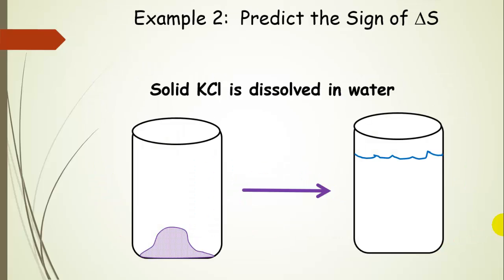Here's another example. Now we're going to take solid potassium chloride at the bottom of the container, and we're going to dissolve it in water. So what do you think happens to the entropy when we do that?